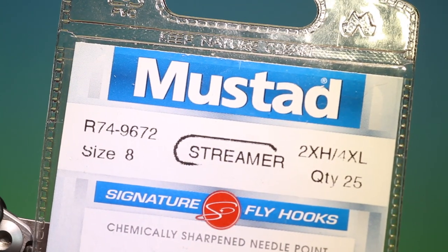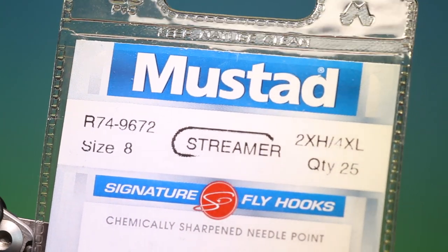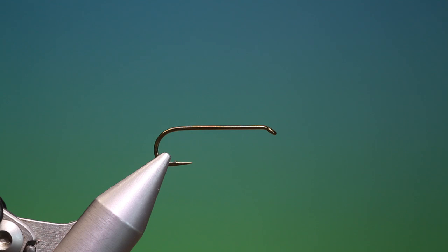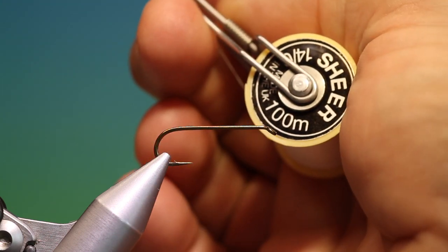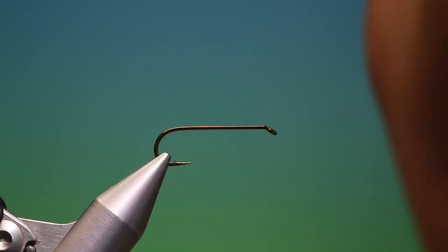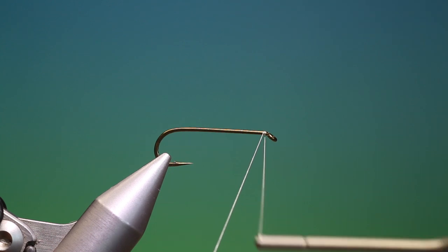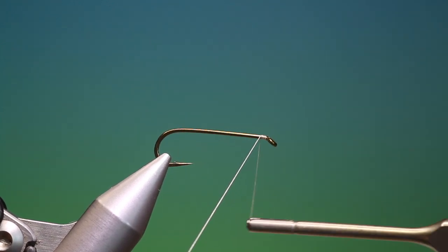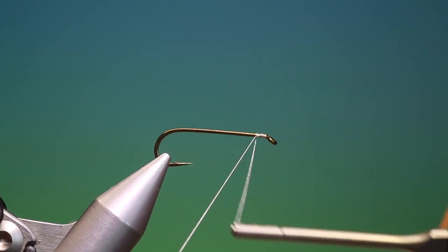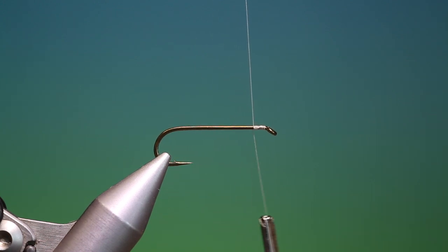Okay, we'll start with the Mustad R74 size 8 streamer hook. This is the Suspender Minky. I've got Sheer 40 knot white, so we'll just attach a little bit at the front here. This is an absolutely great pattern for this time of year on stillwater when the trout are bashing baitfish.